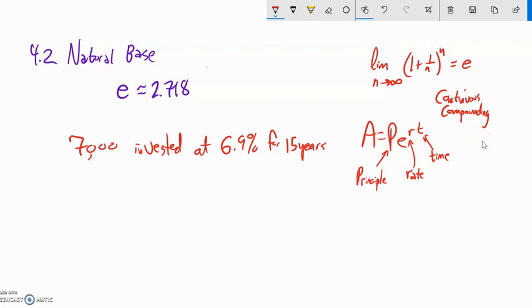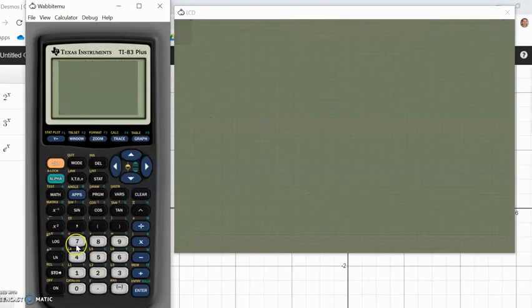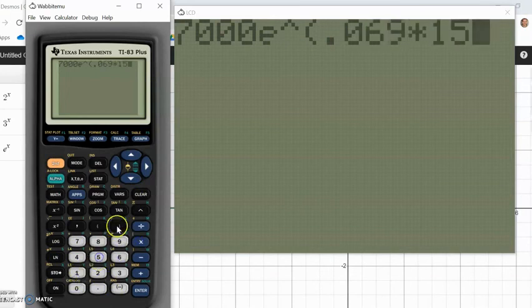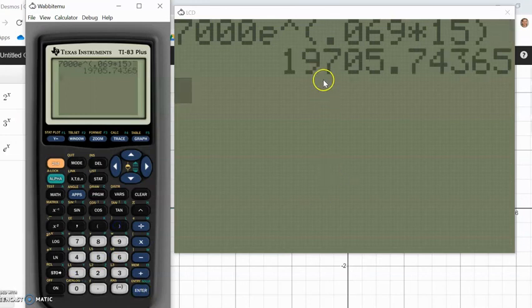So $7,000 is invested at 6.9% for 15 years, and we're going to let it compound continuously. So how much will it be worth? Our principal is 7,000. It's compounded continuously, so we'll say e to the power of the rate. Remember, for the rate, we're going to put it as a decimal. Now the 100% is already in here. We don't have to go 1.069 in this case. It's just the rate. And then we're going to multiply that by the time, which is 15. So $7,000 times e to the power of 0.069 times the time. And it'll be worth about $20,000. Not too bad.